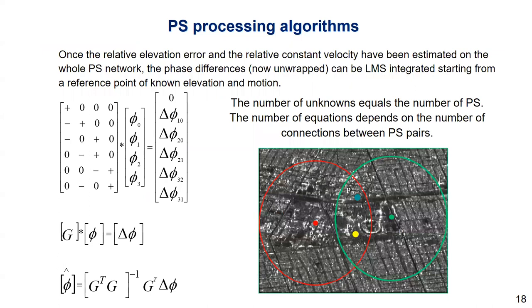Whenever the estimation of the delta epsilon and the delta V, the relative error has been done, how interesting parameter epsilon and V can be calculated by integrating the relative value, basically the delta value, from pairs of neighboring pixels concerning a certain reference point where we know very well the elevation and the motion. In other words, we can recover the unwrapped phase differential phase and integrate them over the whole network of the PS pixels.